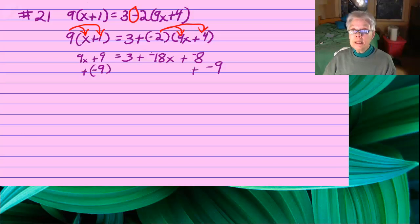Now notice that I add the opposite on both sides. I add the opposite of positive 9, which is negative 9, to both sides. Now that will leave me with 9x equals 3 plus negative 18x plus negative 17.